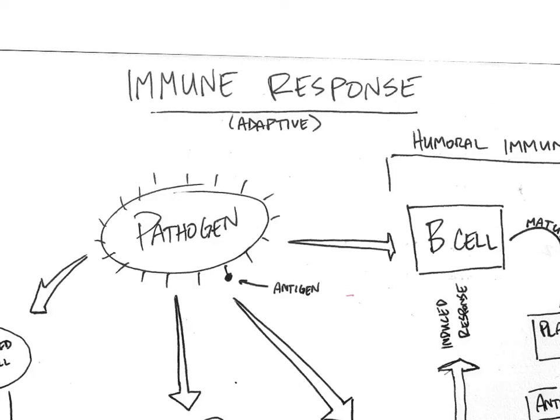Today we're going to start looking at immune responses, and these are adaptive — not innate responses. They're specific to a particular pathogen, something your body is not normally immune to, that you have to build immunity against. These are things like certain bacteria or viruses. This is an immune response: there's a signal sent at one point or another, and your body is responding to it through a few different mechanisms.